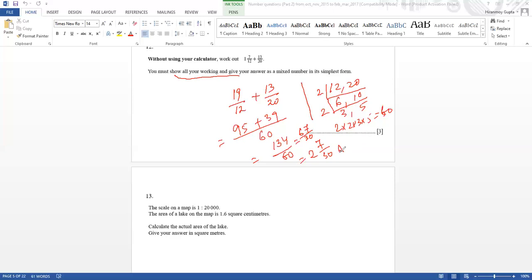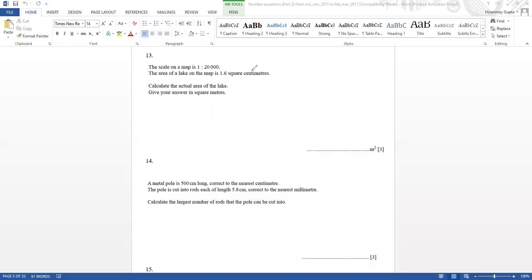Okay, let's start with problem 13. Let's begin. The scale of the map is 1 to 20,000. The area of the lake on the map is 1.6 square centimeters. Remember, when you're doing for area, you have to make this map scale 1 as a square. So you tell me what you're supposed to do. Anyone? So we have to find the scale for the area, so we have to square the scale, and then you have to multiply that by 1.6.